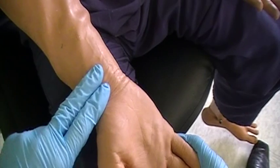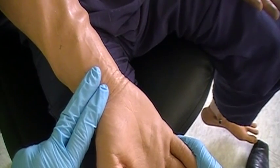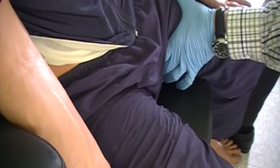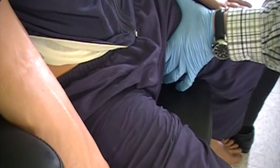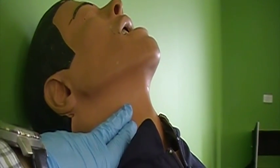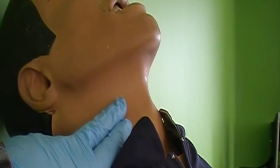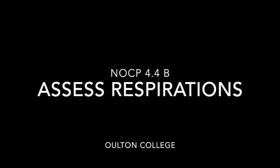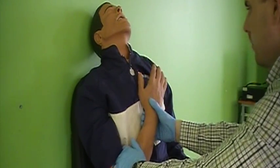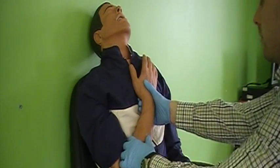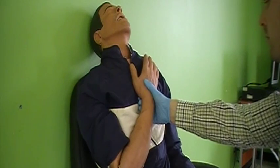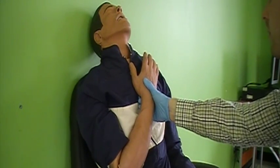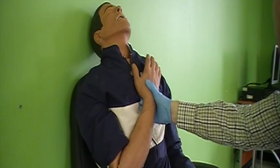To assess a radial pulse, palpate the radial artery for 15 seconds. To assess a femoral pulse, locate the femoral artery and palpate for 15 seconds as well. To assess a carotid pulse, palpate for the carotid artery and assess for 15 seconds. To assess respirations, monitor the patient's chest rise. You should observe the chest rise for 30 seconds and multiply by 2 to determine respiratory rate per minute.